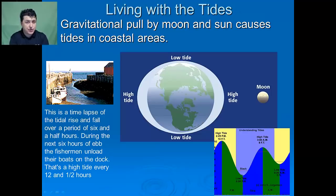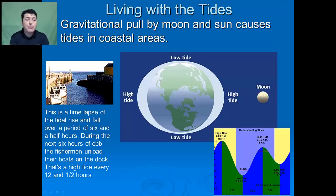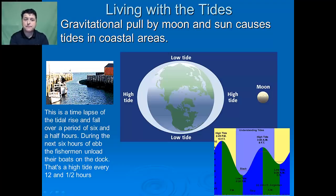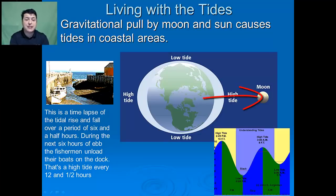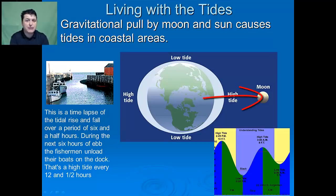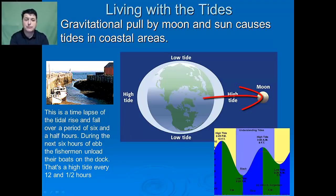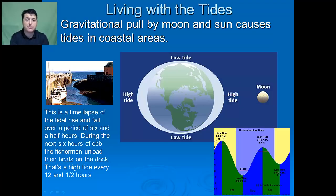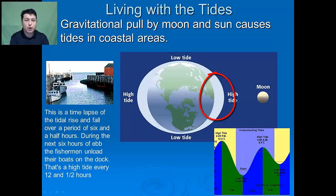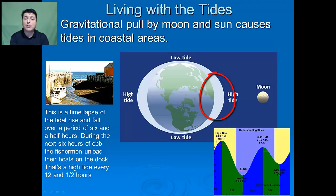These coastal areas are greatly influenced by tides. It is the gravitational pull by the Moon and the Sun that causes the tides. Since the Moon is close to the Earth, it has a strong gravitational pull on it. The Moon pulls on the water on the side nearest to it more strongly than it pulls on the center of the Earth, creating a bulge of water — called a tidal bulge — on the side of the Earth facing the Moon.